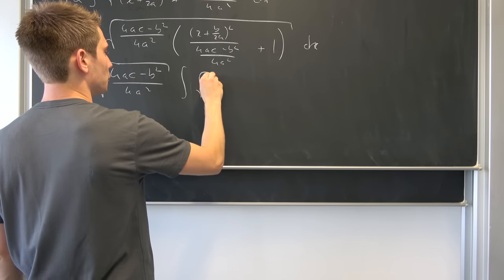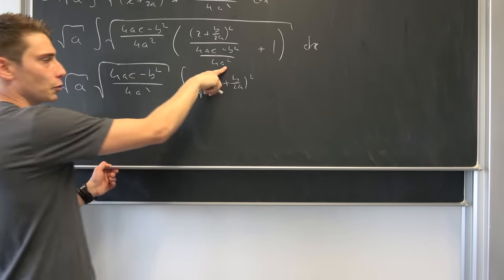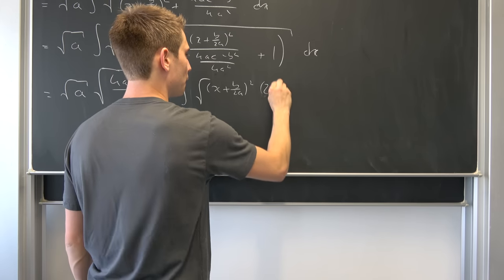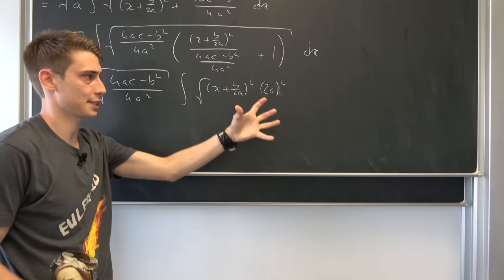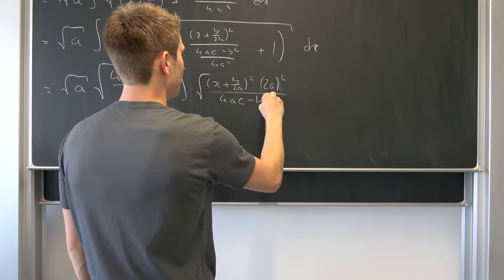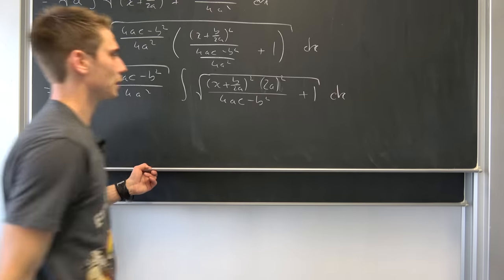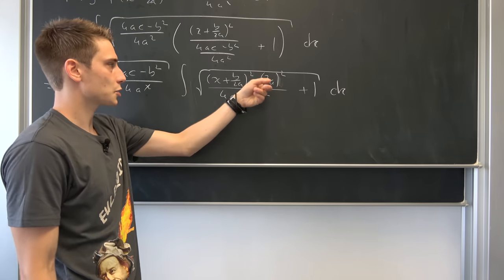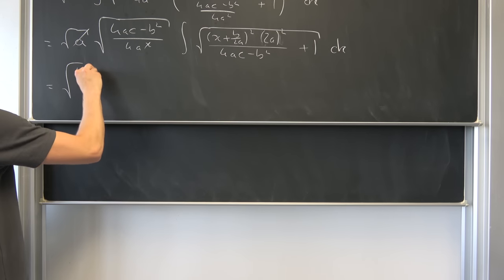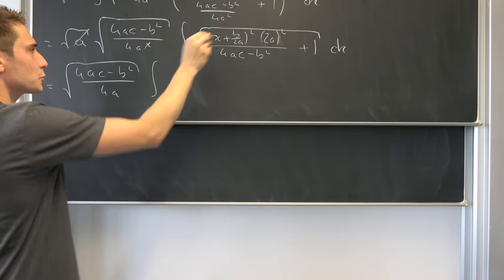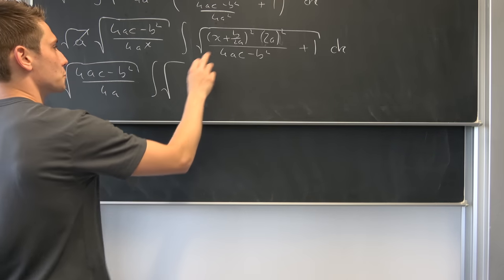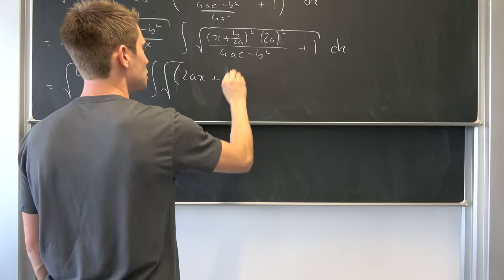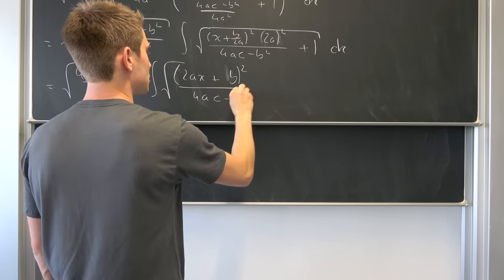Just like before, we assume one of those two parts is positive so we can bring this to the outside. We end up with square root of a times the square root of (4ac − b²) over 4a² times the integral of the square root of (2ax + b)² over (4ac − b²) plus 1. We can turn this complex fraction around by taking the reciprocal — 4a squared is nothing but (2a) whole thing squared — so we get square root of (4ac − b²) over 4a times the integral of sqrt[(2ax + b)² over (4ac − b²) + 1] dx.